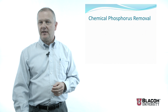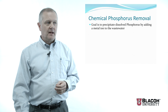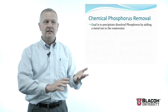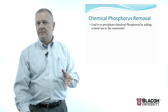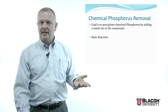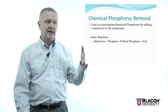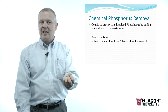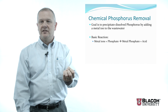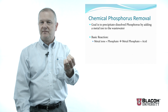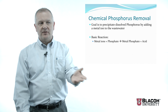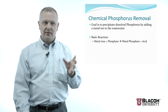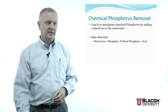Let's talk about chemical phosphorus removal first. The goal is to precipitate the dissolved phosphorus by adding a metal ion to the wastewater. Basically, the metal ions plus the phosphate dissolved in the water combine to form a metal phosphate that is insoluble and will precipitate as a fine solid, with an acid that comes out as a byproduct. Not enough to make the water very acidic, but it's something we calculate and think about when we design these systems.